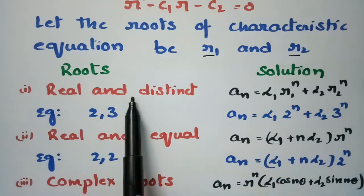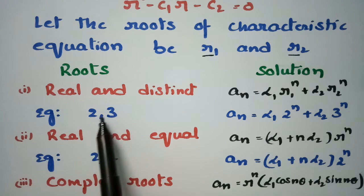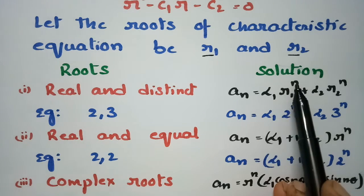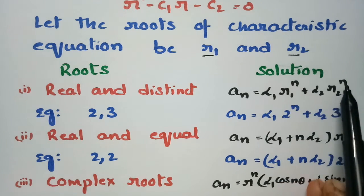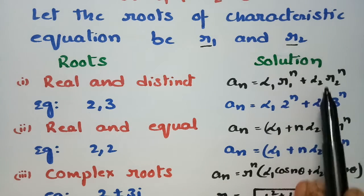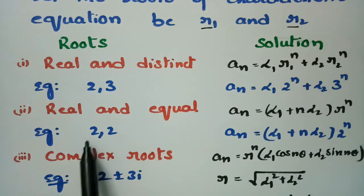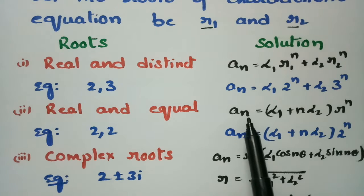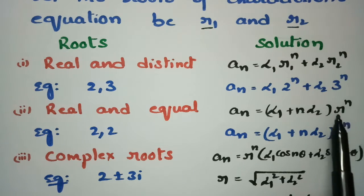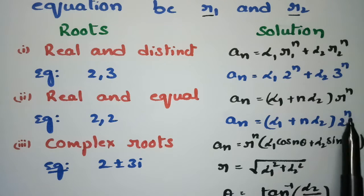Case 1: If R1 and R2 are real and distinct — for example, 2 and 3 — the solution is An = α1·R1^n + α2·R2^n. So in place of R1 we write 2 and in place of R2 we write 3. Case 2: If the roots are equal — for example, 2 and 2 — the solution is An = (α1 + n·α2)·R^n, where we substitute R = 2.